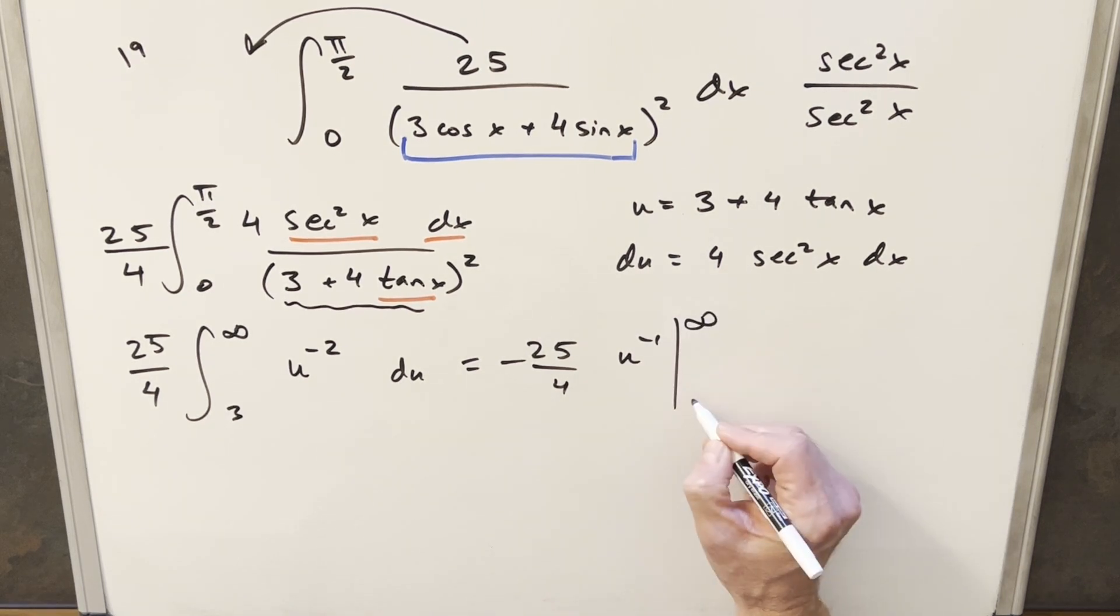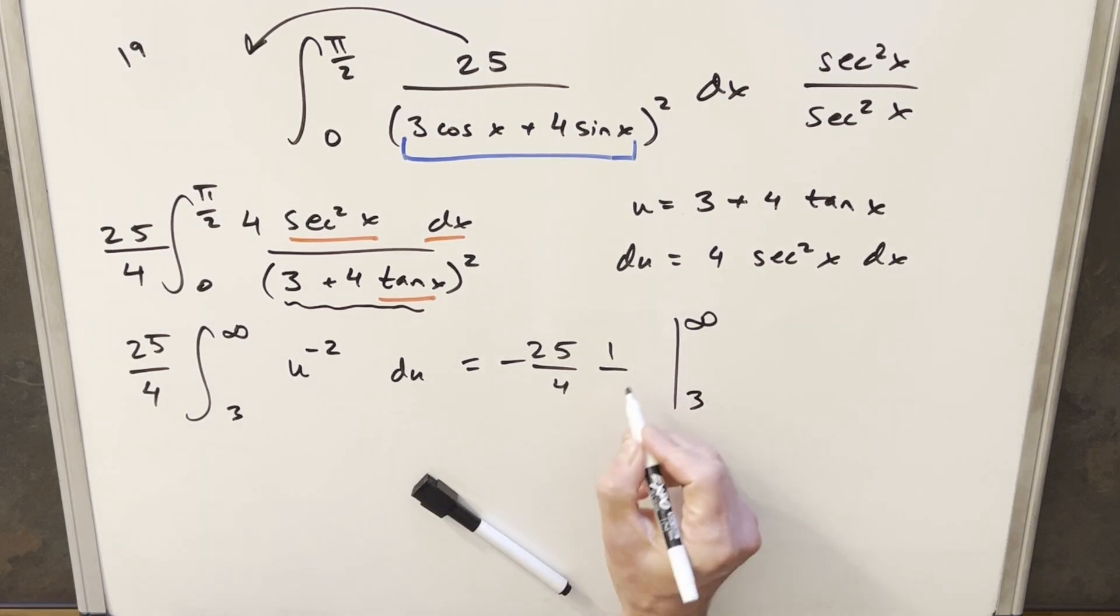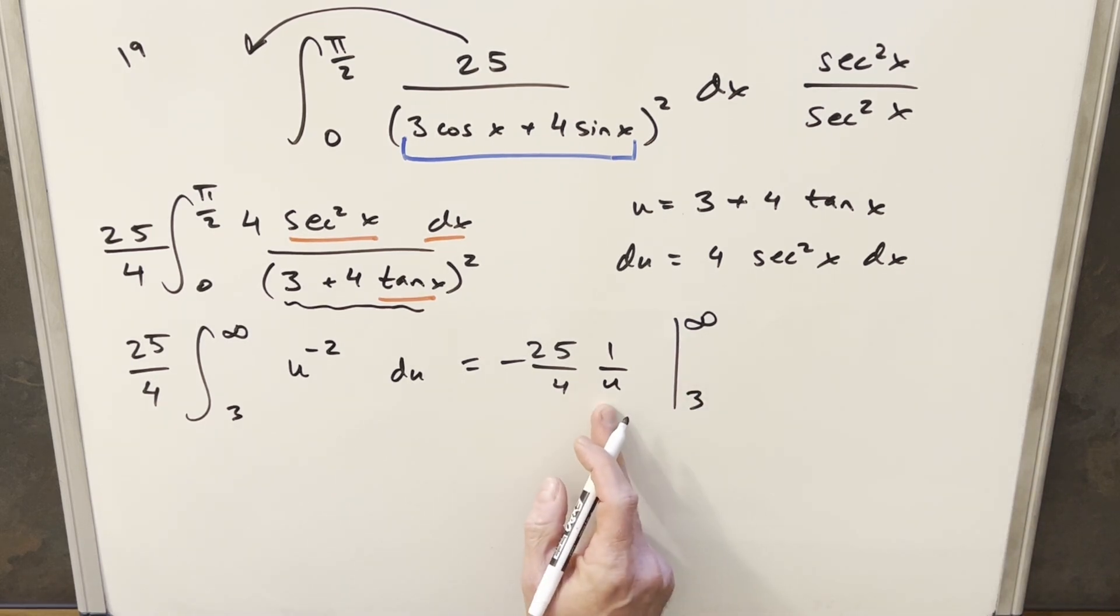And we just need to evaluate this from 3 to infinity. Well, this u to the minus 1, I'm actually just going to rewrite this. I like it better if we write it as 1 over u. So now we'll evaluate this. When we evaluate this at infinity, because we end up with infinity in the denominator, the first term is just going to 0. So we don't have to worry about that.